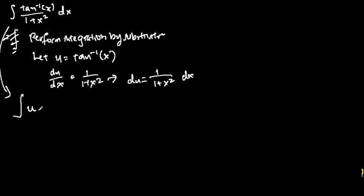We have tangent inverse x is equal to u and then 1 over 1 plus x squared dx is du. So we integrate u du, which just gives us u squared over 2 plus c. Last but not least, we substitute u equals to tangent inverse x back into the equation itself.